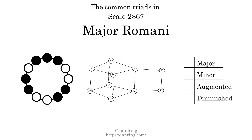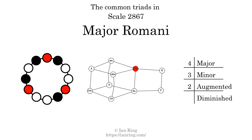Here are the common triads present in this scale. The diagram in the center is a graph of parsimonious voice leading between triads. There are 4 major triads, 3 minor triads, 2 augmented triads, and 1 diminished triad. Here is a Hamiltonian path of parsimonious voice leading that uses all the triads.